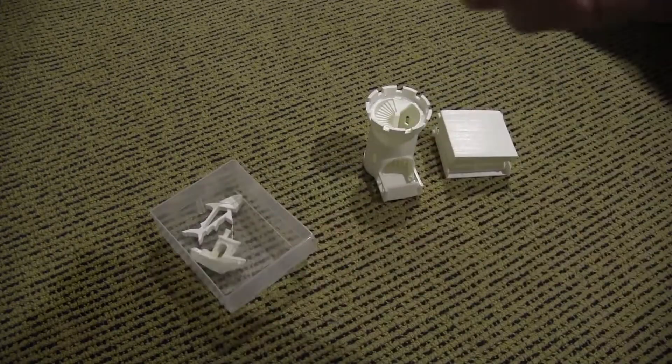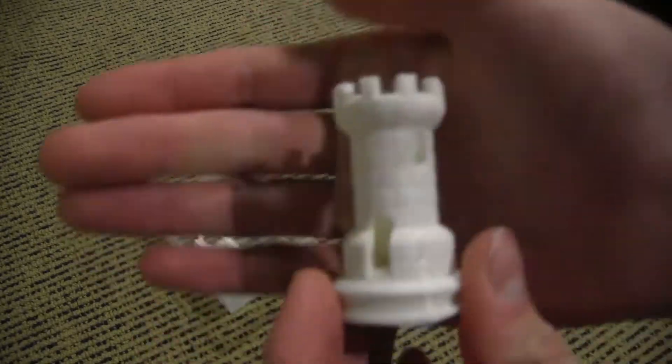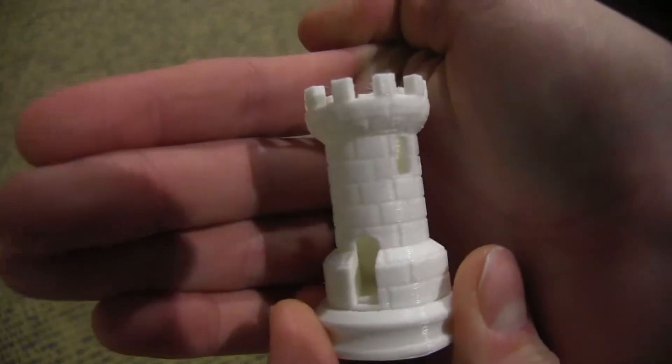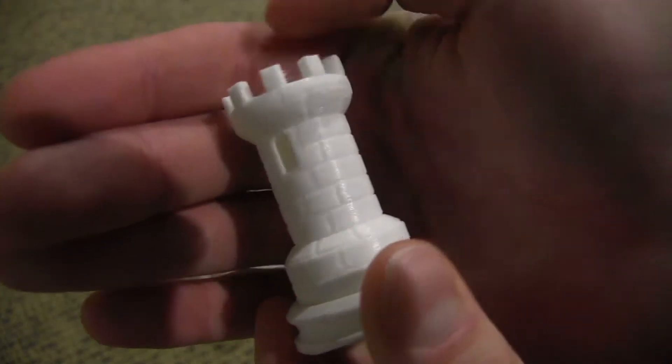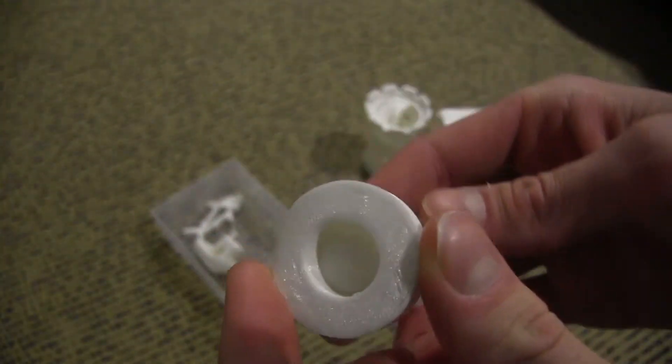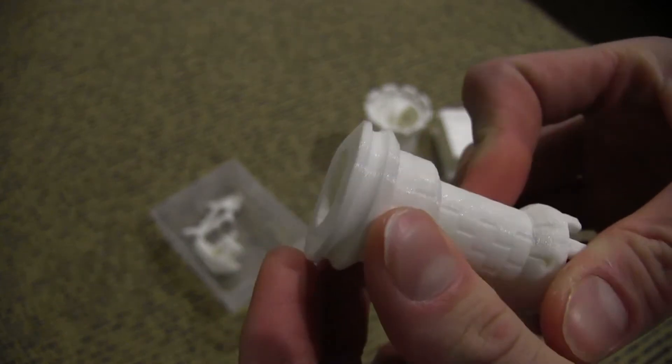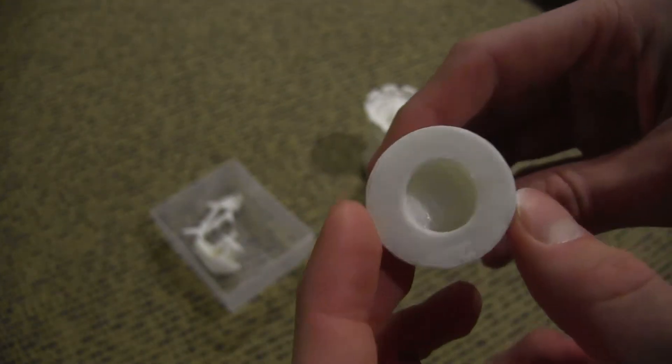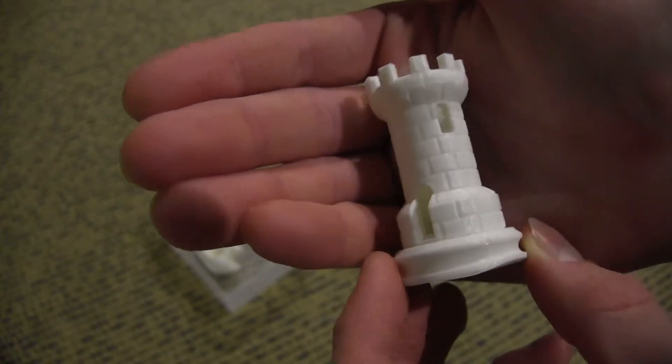So here we have a Rook, and this came out really nicely. There's the bottom of it, a little bit of warping but that was probably more of my printer's fault than the filaments.